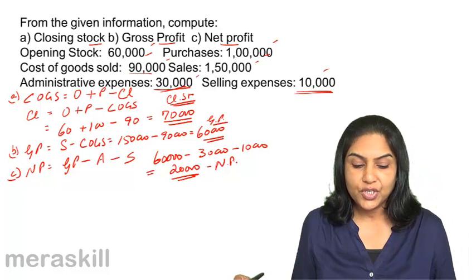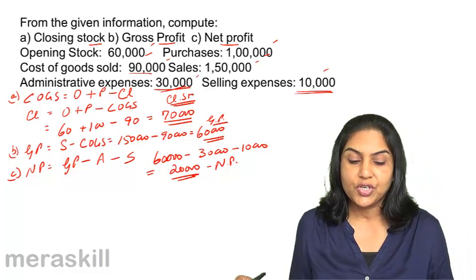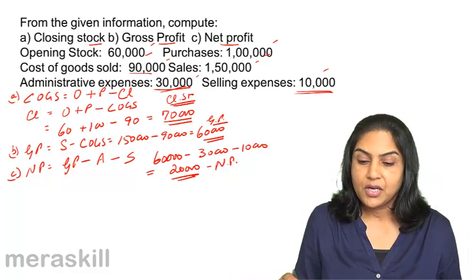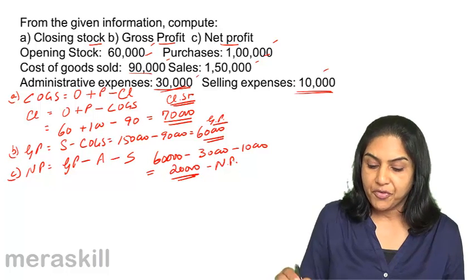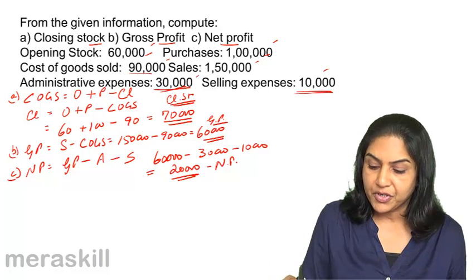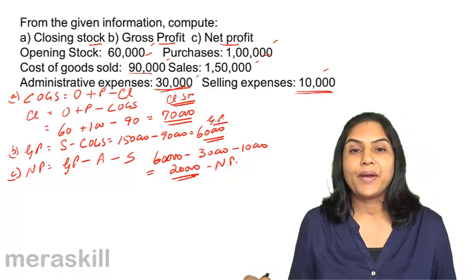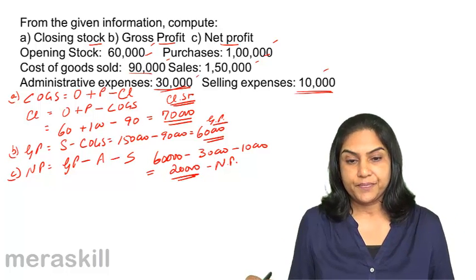So to summarize: closing stock is 70,000, gross profit is 60,000, and net profit is 20,000.